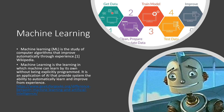For example, in this picture, the process works as follows: first, we get the data. Second, we clean and prepare the data. Then we use a trained model. After that, we test the data. And then the fifth step, it starts improving by itself.